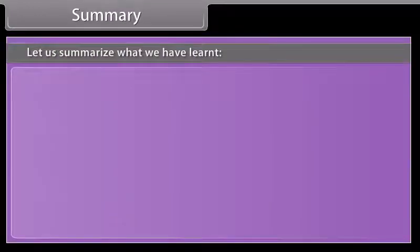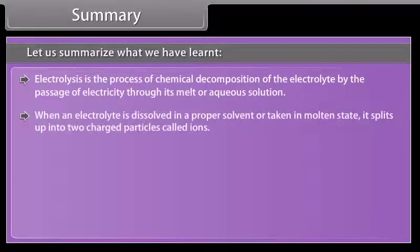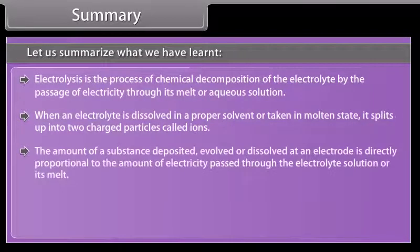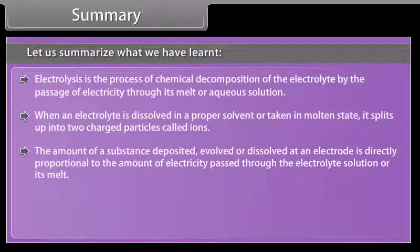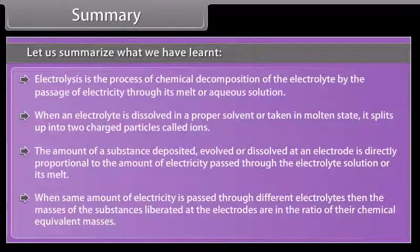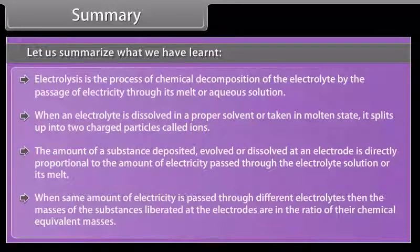Let us summarize what we have learned. Electrolysis is the process of chemical decomposition of the electrolyte by the passage of electricity through its melt or aqueous solution. When an electrolyte is dissolved in a proper solvent or taken in molten state, it splits up into two charged particles called ions. The amount of a substance deposited, evolved, or dissolved at an electrode is directly proportional to the amount of electricity passed through the electrolyte solution or its melt. When same amount of electricity is passed through different electrolytes, then the masses of the substances liberated at the electrodes are in the ratio of their chemical equivalent masses.